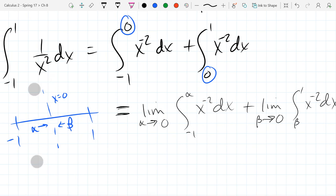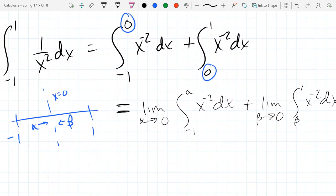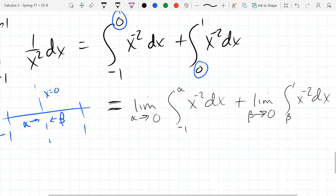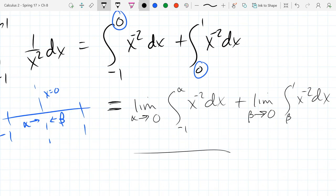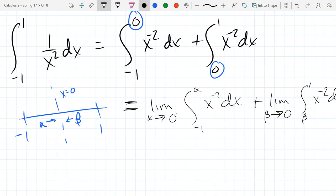I have to be a little bit more careful with my values, my limits are approaching. You need to be one-sided limits, both of them, and you want to make sure you get the side right for each one. Alpha is approaching zero on the negative side, and beta is going to approach zero on the positive side.